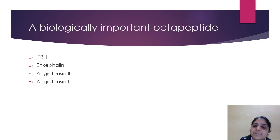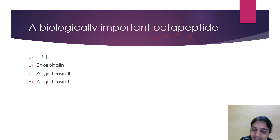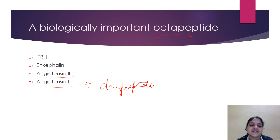Second MCQ — a biologically important octapeptide. Among the options, TRH is a tripeptide, enkephalin is a pentapeptide, and angiotensin 2 is an octapeptide. So the answer is C — angiotensin 2 is the biologically important octapeptide. Angiotensin 1 is a decapeptide.